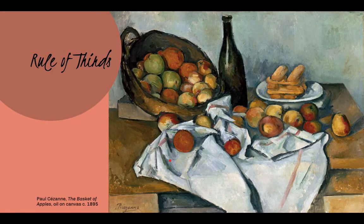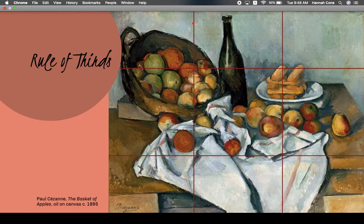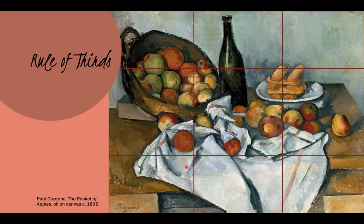First of all, the rule of thirds. Basically, the rule of thirds dictates that you should not place your focal point in the center of your composition. If you look at this painting by Paul Cézanne, you'll see that the focal point is about here, and there's also an interesting place here. When you superimpose a 3x3 grid on your piece — so it looks like a tic-tac-toe board — your focal point or the interesting parts of your painting or drawing should go into one of these four sweet spots, rather than right in the middle.